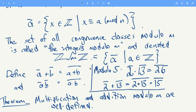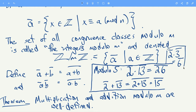There is a slight problem: this definition might depend on what representative for the congruence class I choose. For example, 13 and 3 represent the same congruence class. So we could also perform the multiplication as 2 times 3, and that would give you the congruence class of 6. If the congruence class of 6 is different from the congruence class of 26, that is a big problem. Luckily, modulo 5, these are the same, because 26 minus 6 is 20, which is a multiple of 5, so 26 is congruent to 6 mod 5.